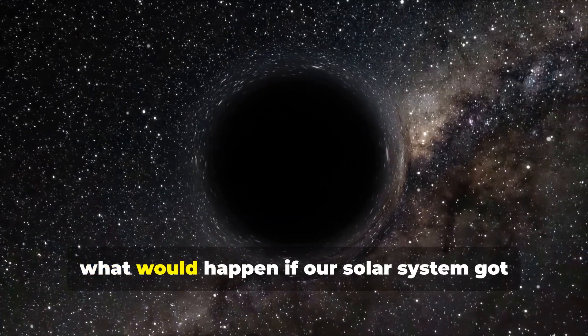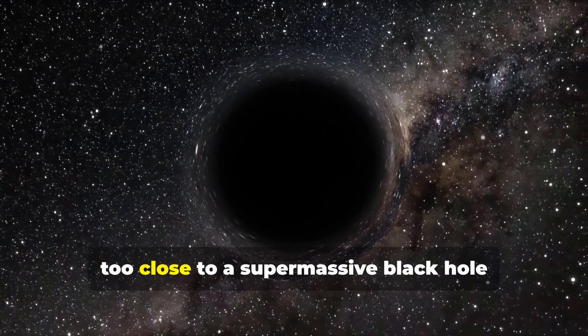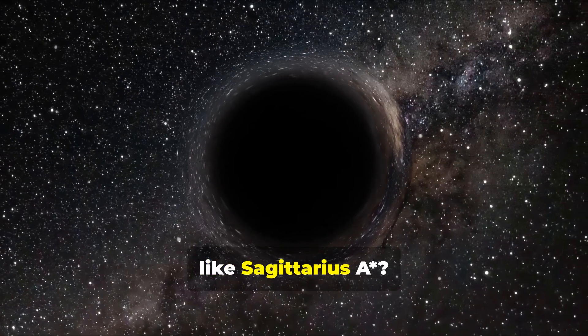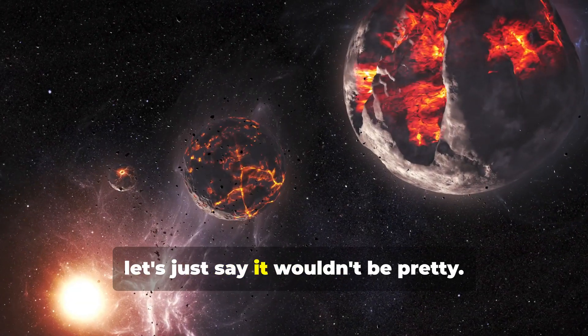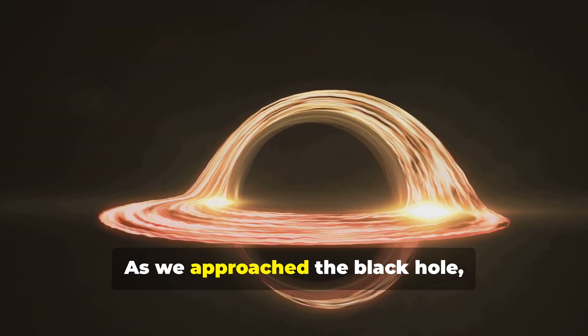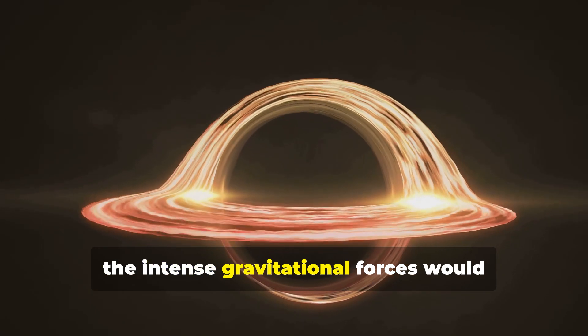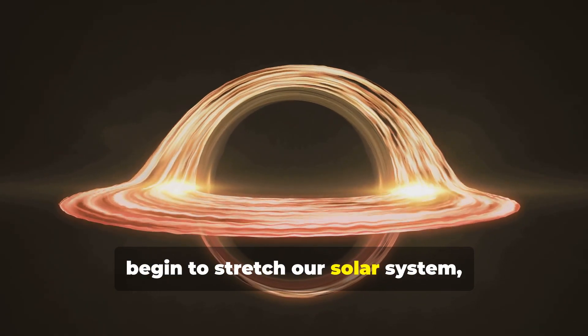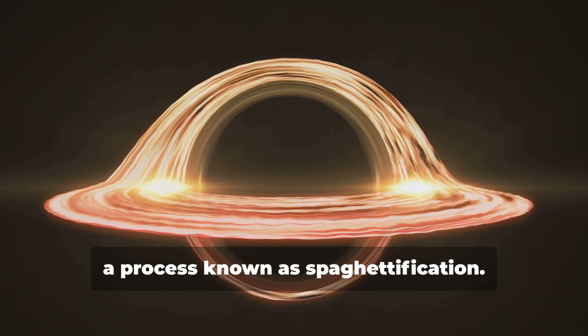Now you might be wondering, what would happen if our solar system got too close to a supermassive black hole like Sagittarius A asterisk? Well, let's just say it wouldn't be pretty. As we approached the black hole, the intense gravitational forces would begin to stretch our solar system, a process known as spaghettification.